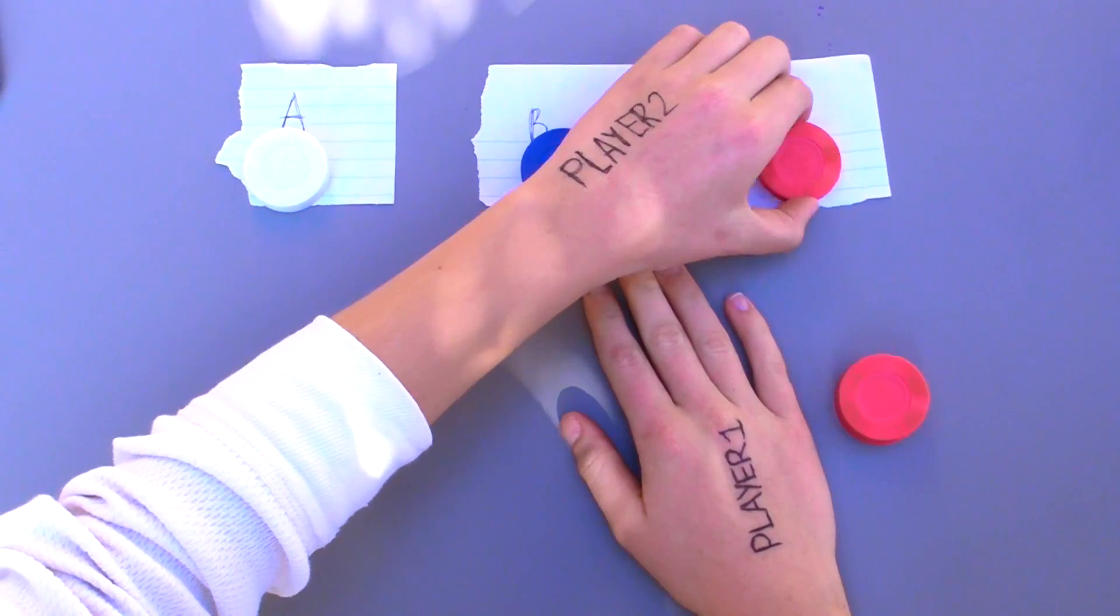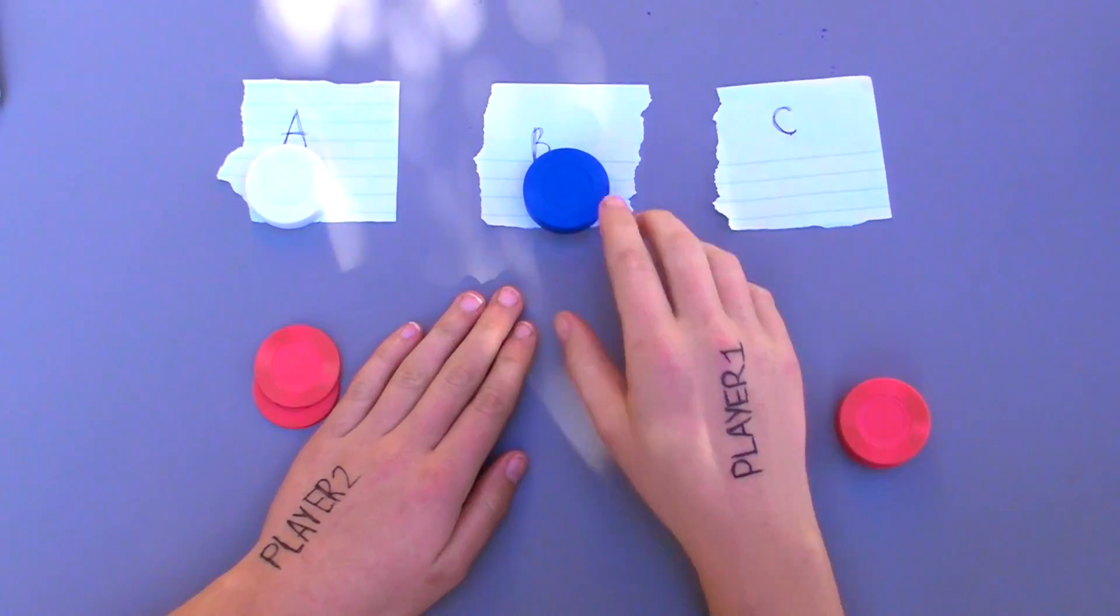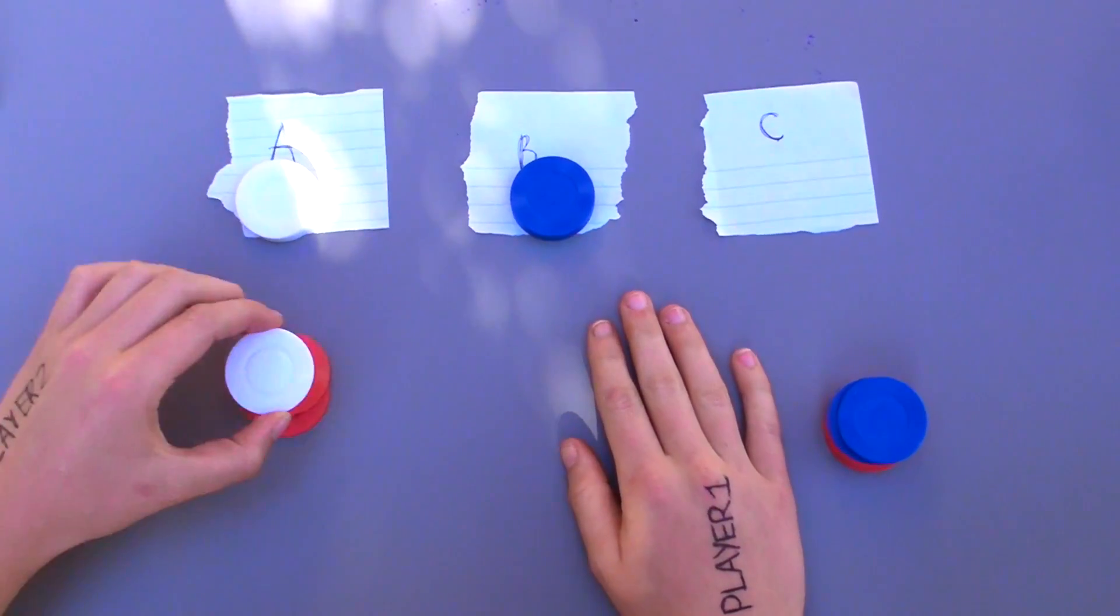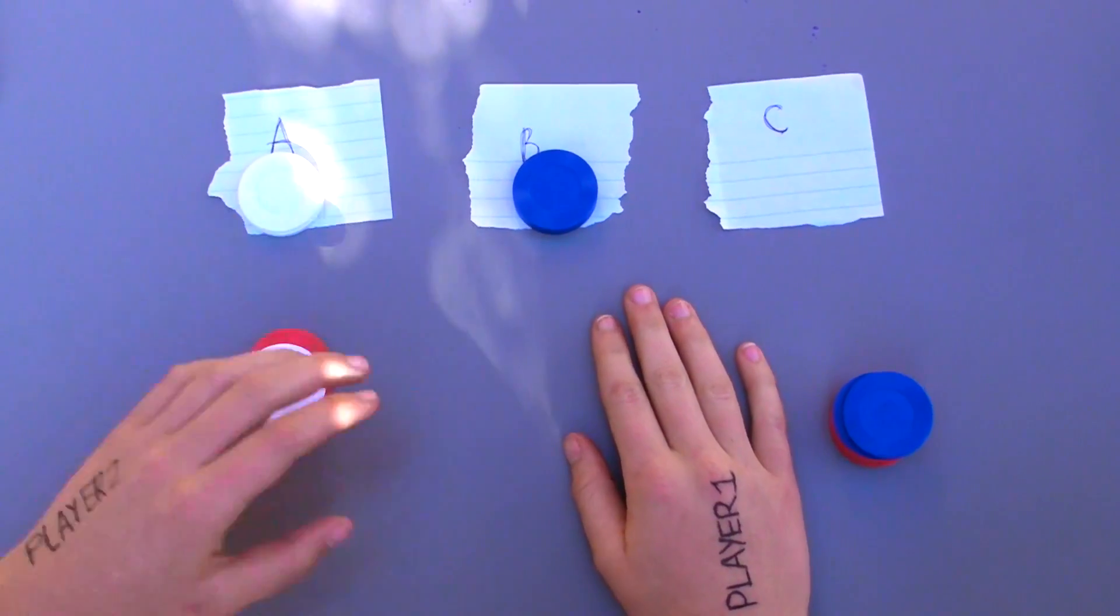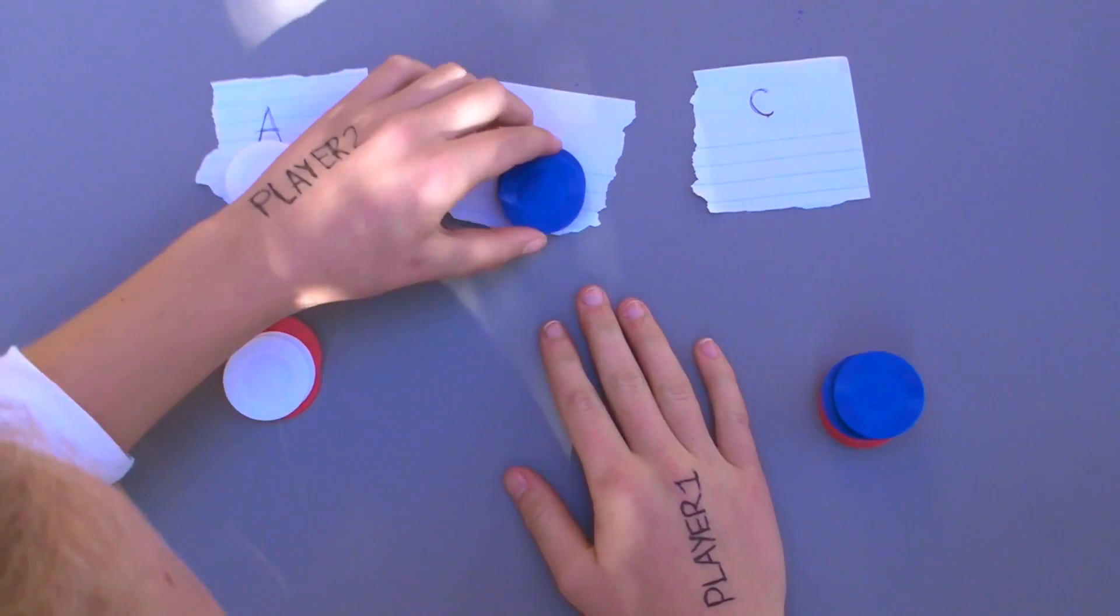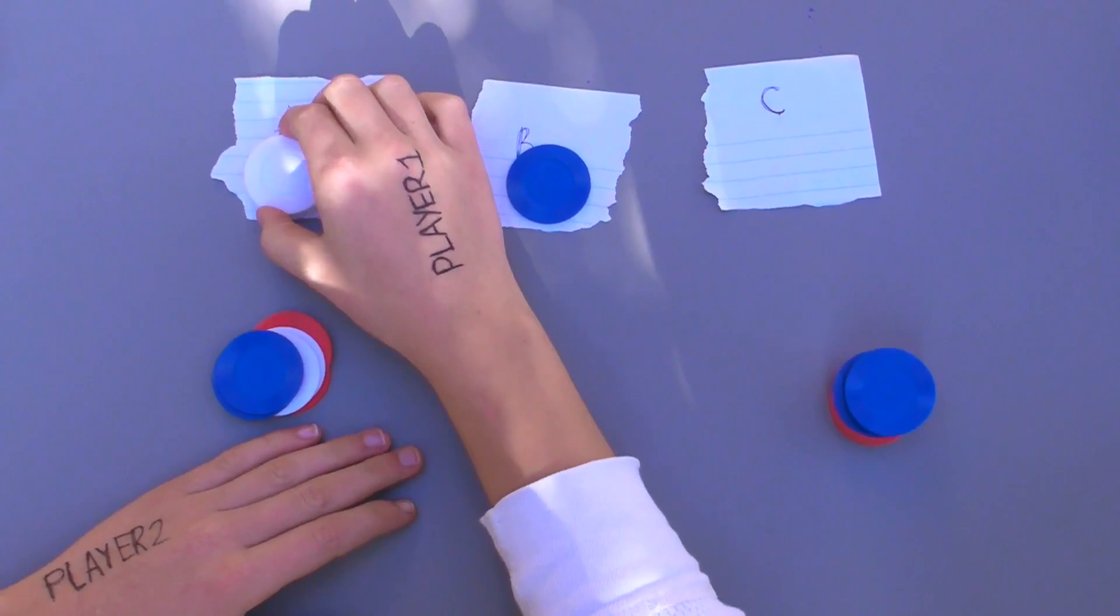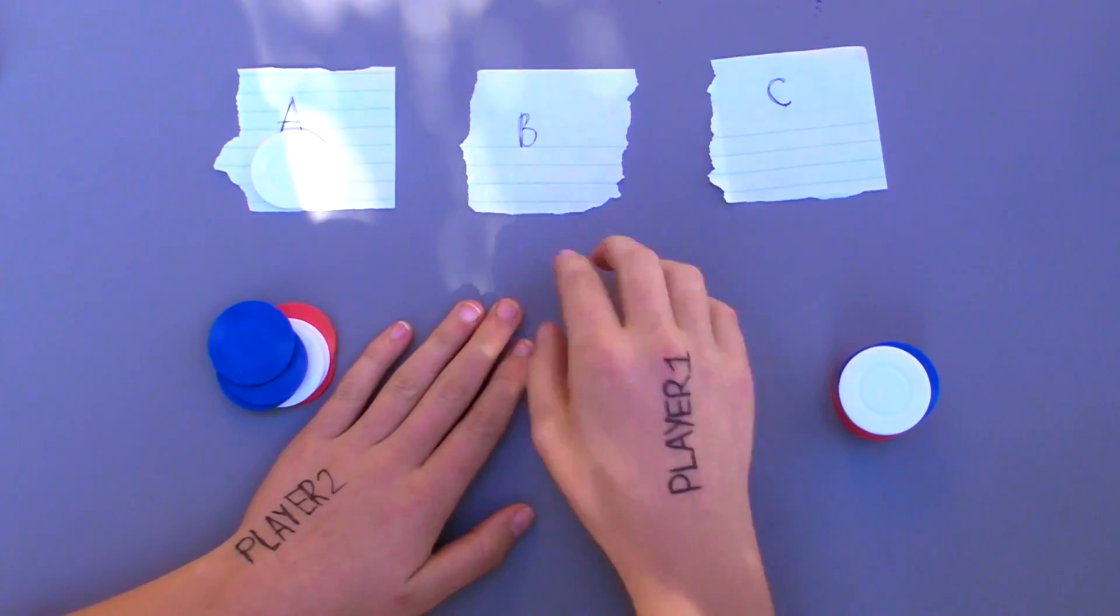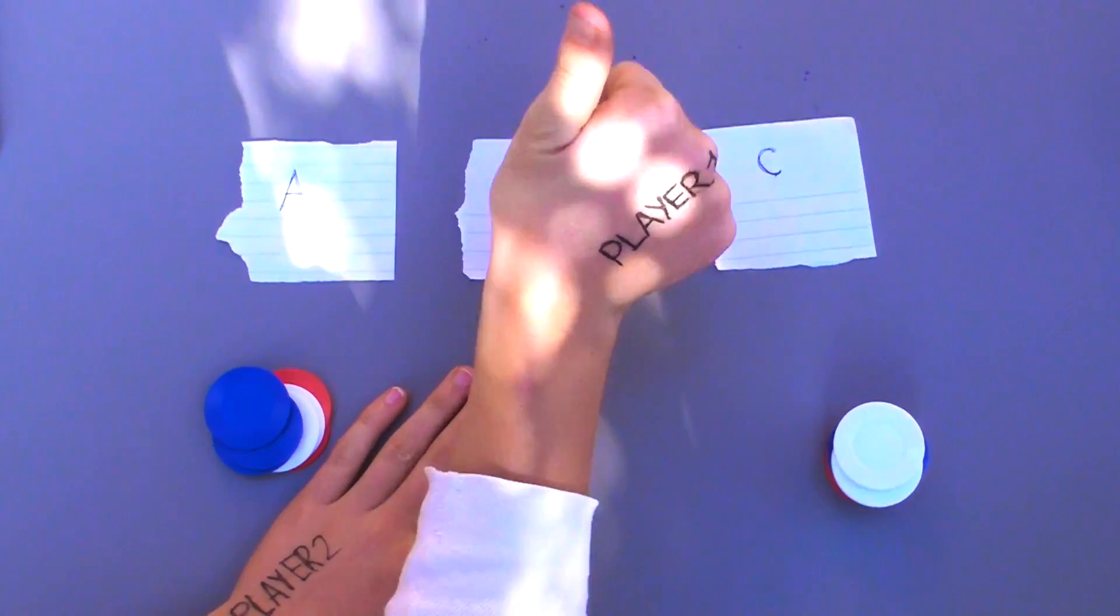Player 2 takes 2 from pile C. I take 2 from B. Player 2 takes 2 from pile A. I take 2 from pile B. Player 2 takes 2 from B. I take 2 from A. Player 2 takes 1 from B. I take the last from pile A, and I win.